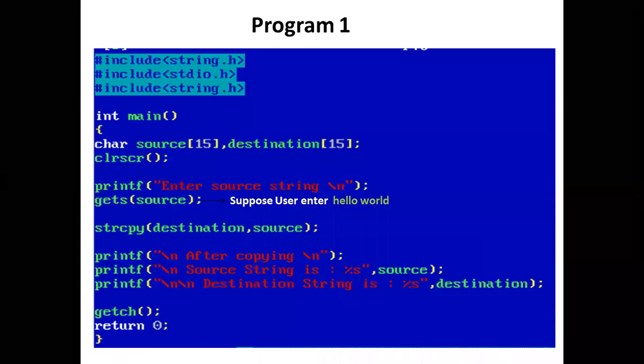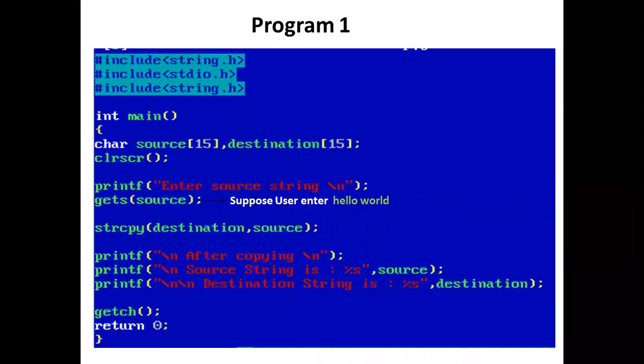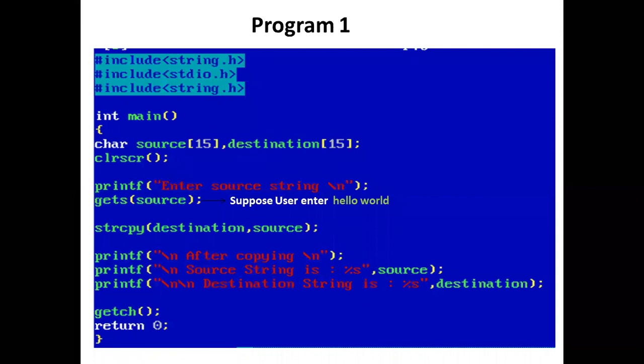Program 1. We have included the string.h header file because we have used the strcpy function, which is defined in string.h. In the main function, we have declared two string variables, source and destination, of size 15 each.